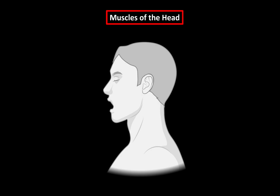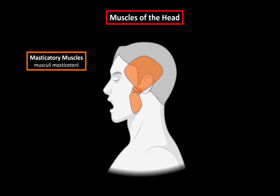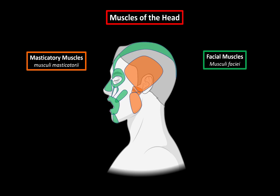All muscles of the head are divided into two groups. The first group is the muscles of mastication. Mastication means to chew, so those are all the muscles responsible for chewing when you're eating. The second group is going to be the facial muscles, or the muscles responsible for facial expression. We're going to focus on the mastication muscles here.